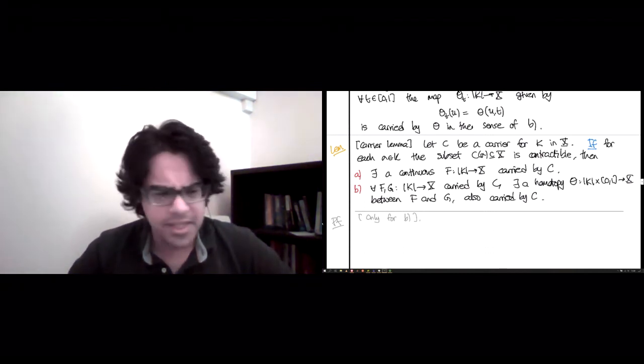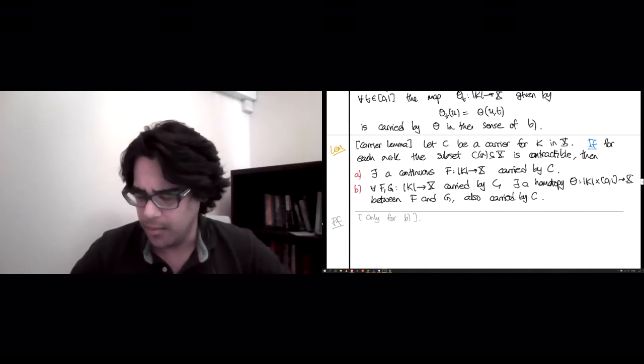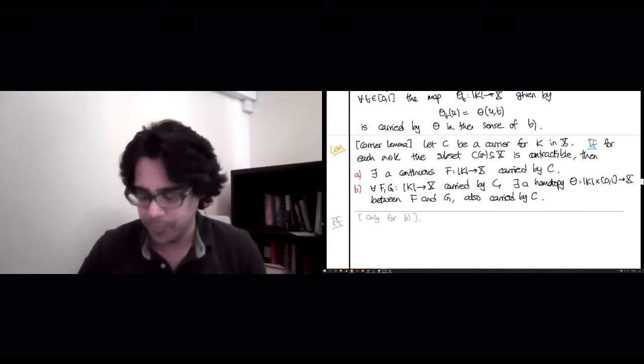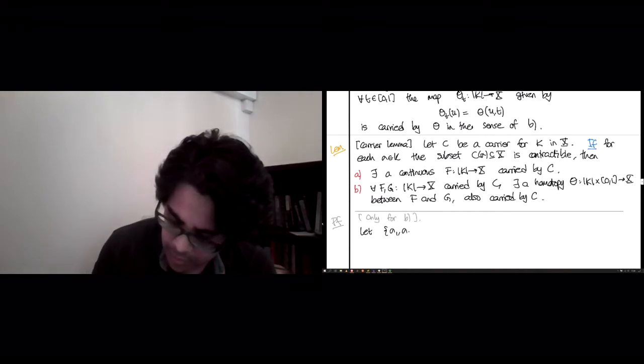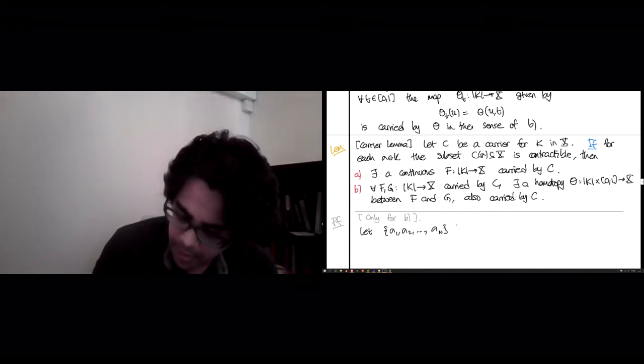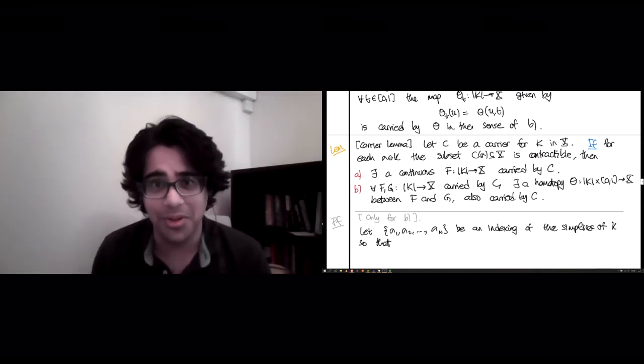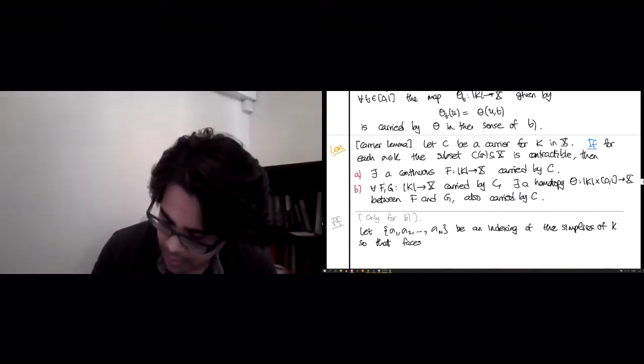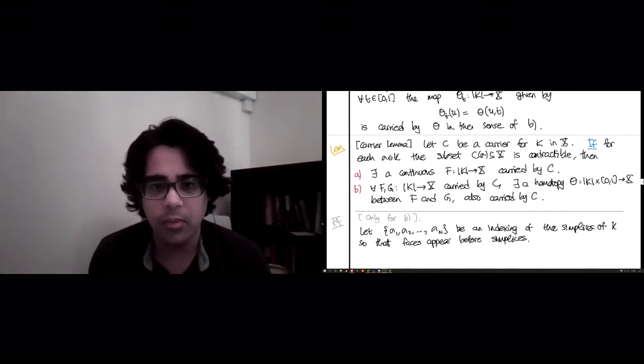Now the proof, I've seen a few proofs of this result. Like I said, it's not as well known as it should be. Almost all the proofs are inductive in some way. And the way to proceed is to take your simplicial complex K and index the simplices in a nice way. So let sigma_1, sigma_2, up to sigma_N be an indexing of the simplices of K so that which respects the face partial order, right? So that faces appear before simplices.